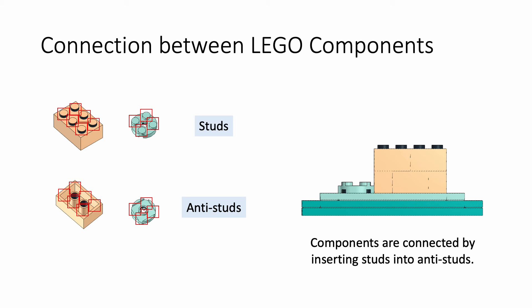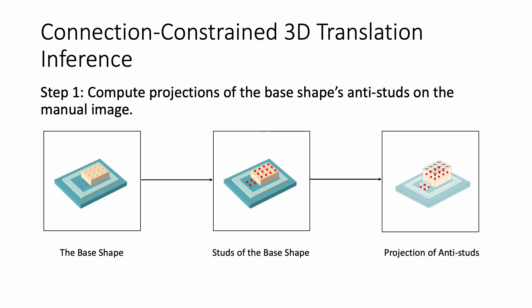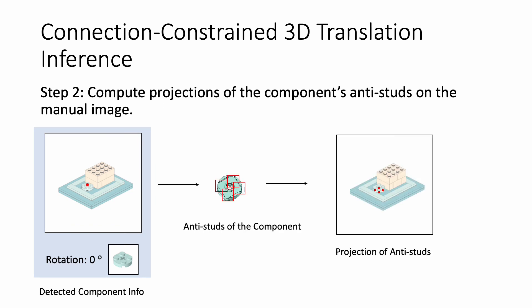Motivated by this constraint, we design a connection constraint 3D translation inference algorithm. First, given the base shape, we compute the studs of the base shape and then project them on the manual image. In the second step, given the 2D information of the detected component, we can also obtain the projection of its anti-studs on the manual plane.